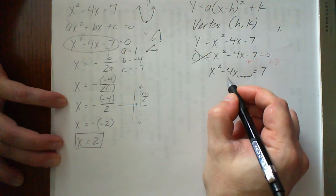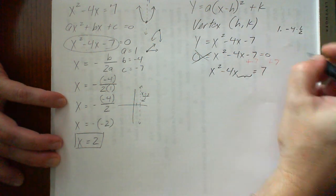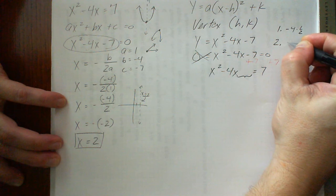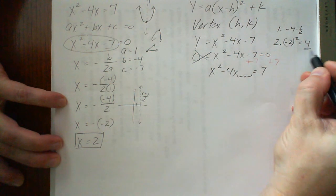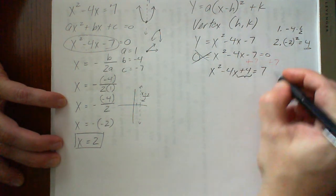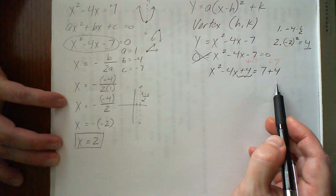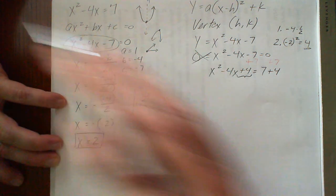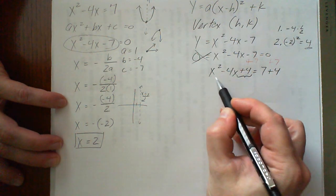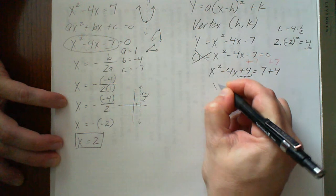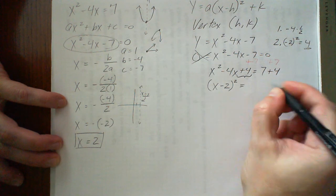I'm going to take the coefficient of my x term, and I'm going to cut it in half. So negative 4 times 1 half, that equals negative 2. So my next step here is to take that negative 2 and square it. That equals 4. Now I'm going to use this 4. I'm going to add it to each side of the equation. And remember, I can't add something to one side of the equal sign unless I also add it to the other side of the equal sign. I have to keep everything equivalent as I'm moving through this process. The reason we complete the square is we're creating a perfect square trinomial over here on the left-hand side. So we're going to factor that. That's just x minus 2 times x minus 2. I'm going to write that as x minus 2 squared equals 7 plus 4 is 11.